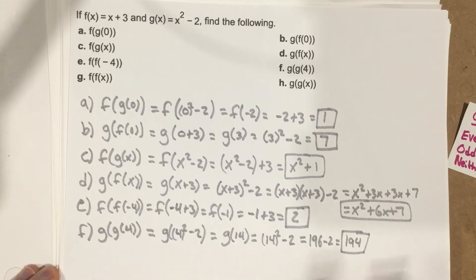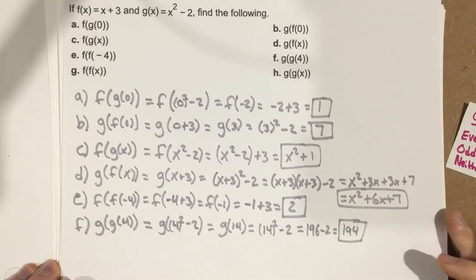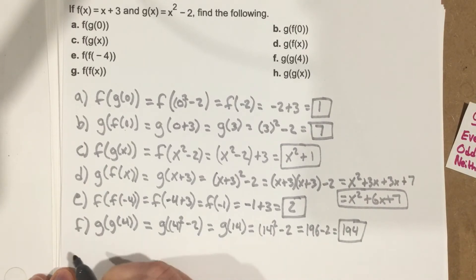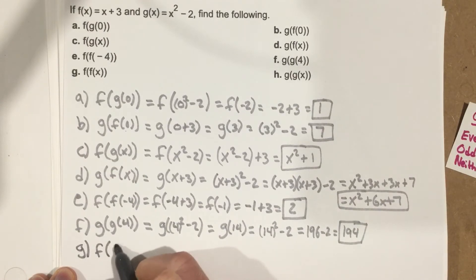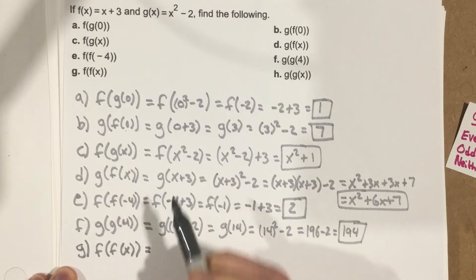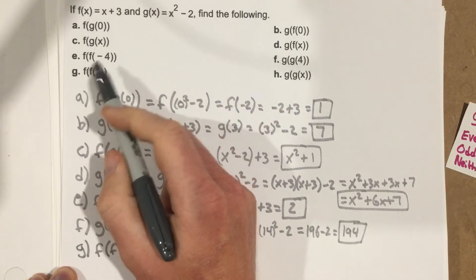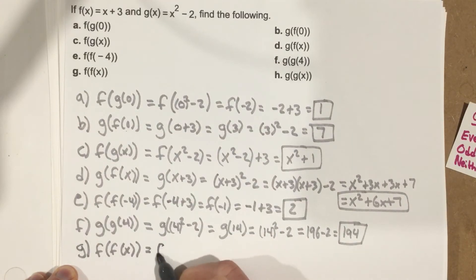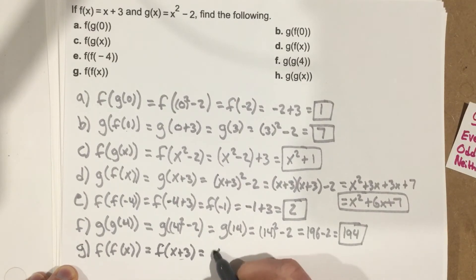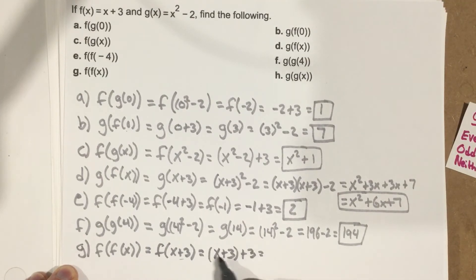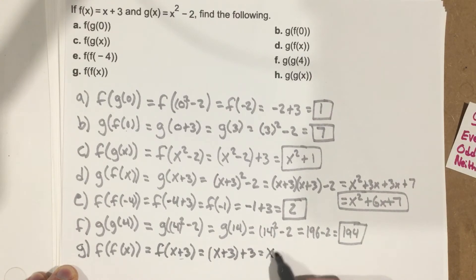Part g: f of f of x. I'm taking the f function and plugging it back into itself. So that's f of x plus 3. Taking x plus 3 and plugging it into f: x plus 3 plus 3, which is just x plus 6.